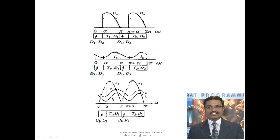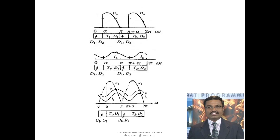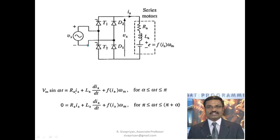This is for rectifier control. If your supply is AC, you use a half-controlled rectifier to get a controlled DC voltage. By controlling the DC voltage you can control the speed of the DC motor. That is the half-controlled rectifier control, as discussed in previous session videos.